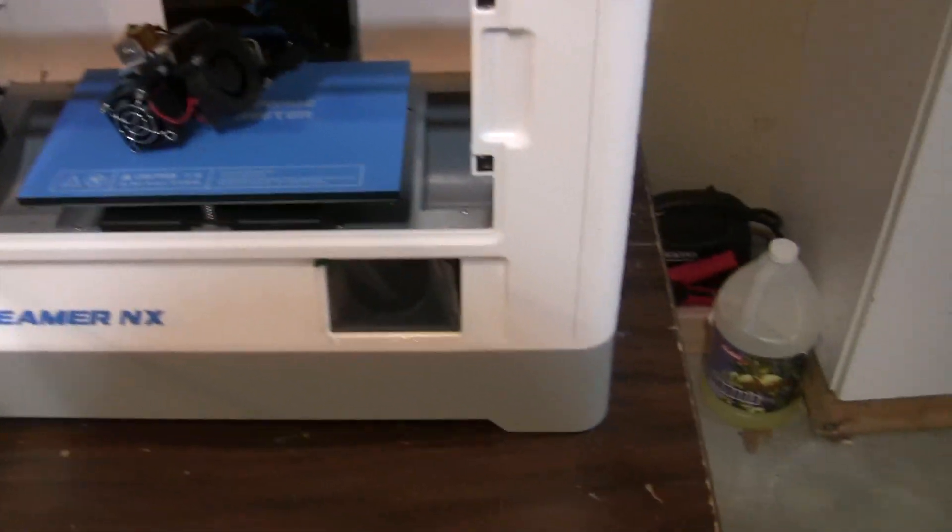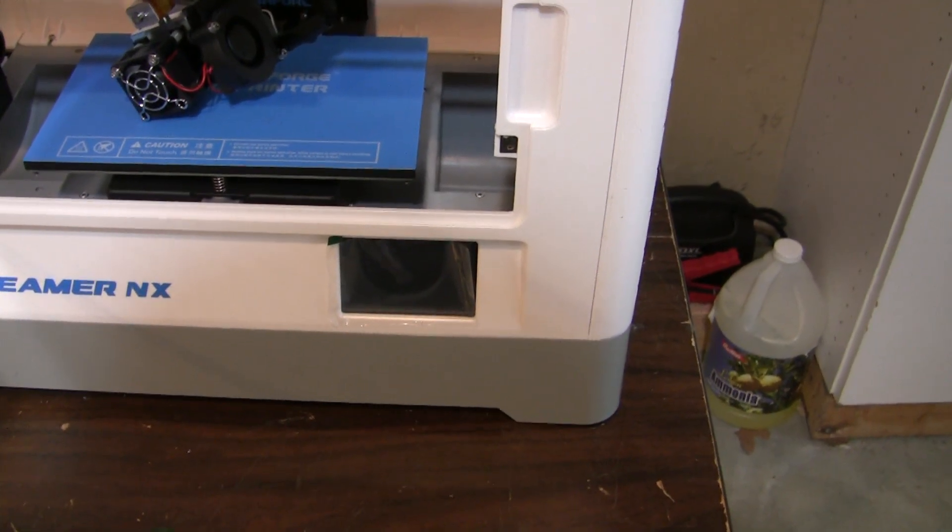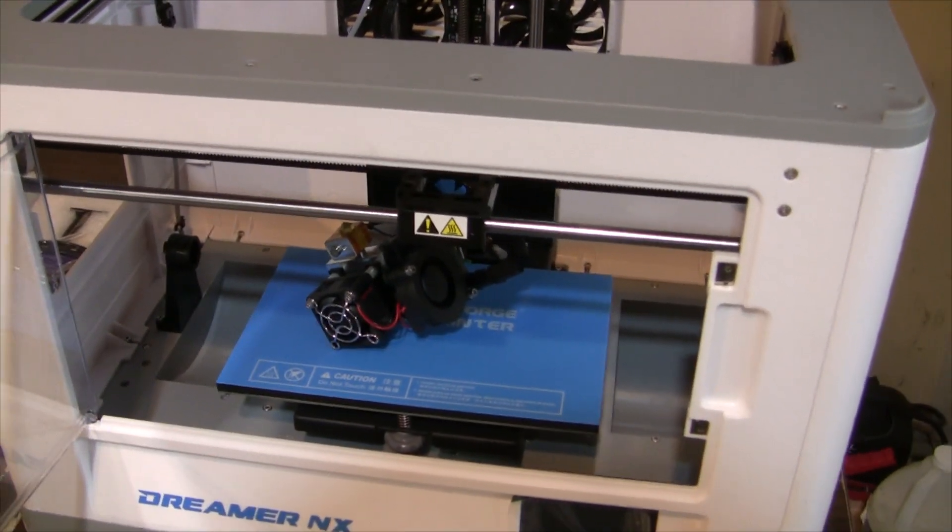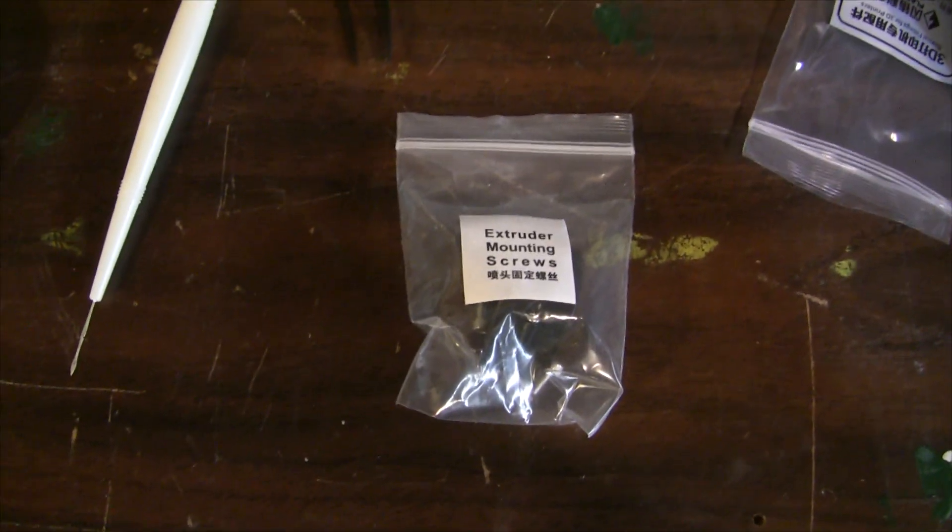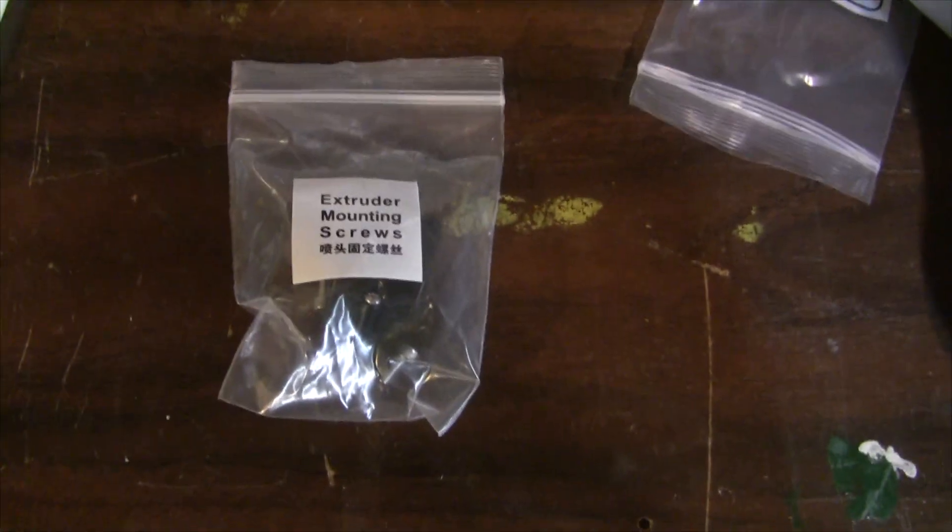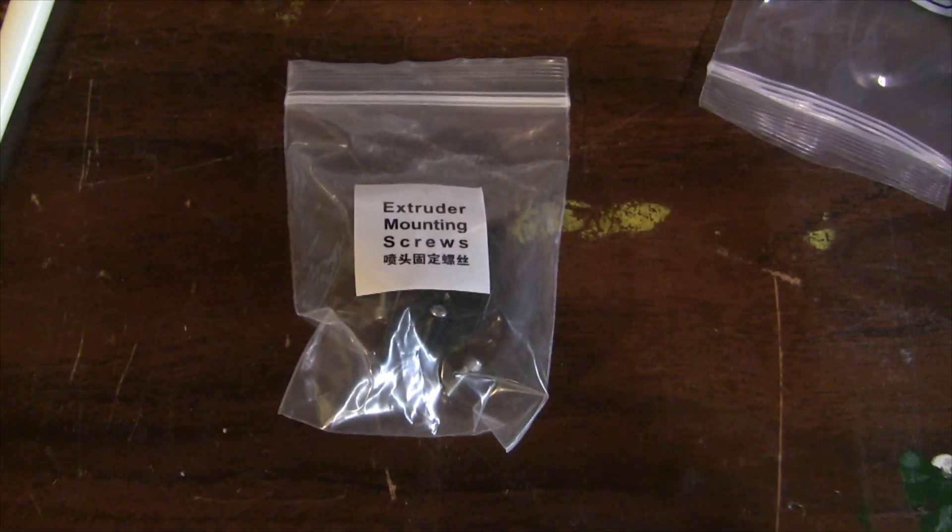So we have to mount the head. There's the touch screen. There's the other shield. You have to mount the head and follow all the instructions and get it going. Alright, there's one thing I missed getting out of the box. It's the all-important extruder mounting screws. Without those, you can't really mount it.